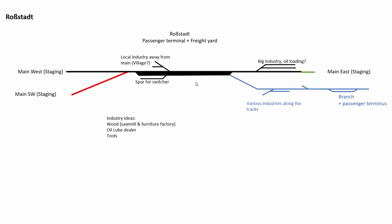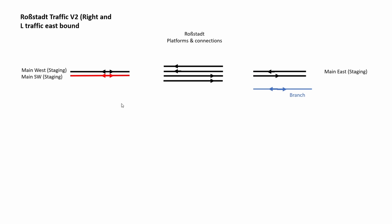Now that the schematics, story, and traffic generation are clear, we need to start filling in the platform itself. On the left we have mainline west and mainline southwest in black and red; on the right we have main east; and in blue the branch line. Zooming into the platforms in the station itself, the client wanted four platforms — so that's what I drew in schematically. We dedicated the north two platforms to the westbound direction and the south two platforms to the eastbound direction. We're going to connect the dots and define all the different traffic scenarios that will take place in Rostadt.